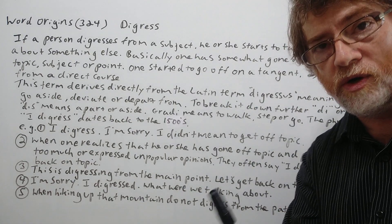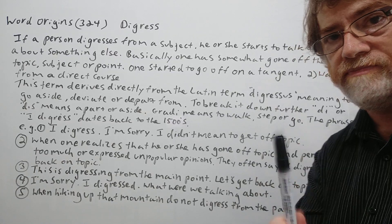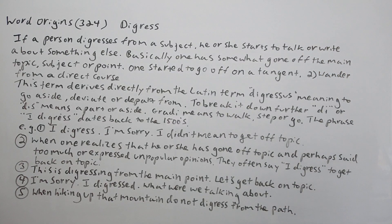Hi, this is Student AP and this is Word Origins 324. The word origin today is digress. Somebody want a screenshot? Do it right now. Let's get right to it.